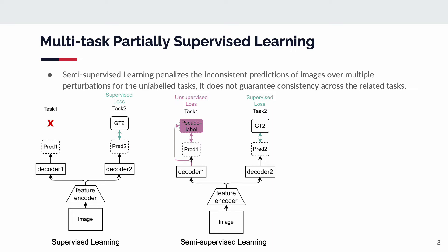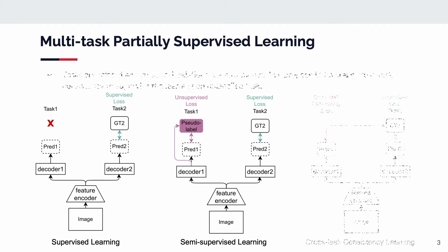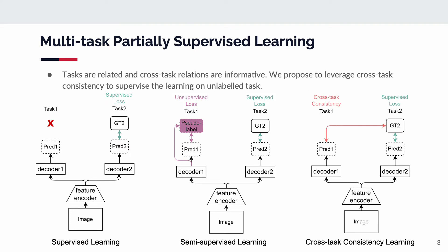For example, if we are going to perform depth estimation and semantic segmentation, we know an area is a road, and that area in depth should be flat. To this end, we propose to leverage cross-task consistency to supervise the learning on unlabeled tasks.